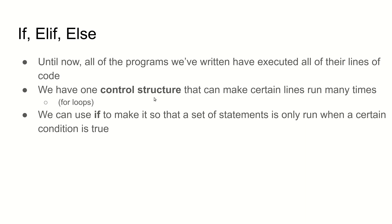Up until now, the programs that we've looked at were ones where each line of code got executed no matter what the input was, no matter what the different variables were equal to. The program just did one line, the next line, and so on. But we have seen one control structure — one structure in our code that can make it so that certain lines run lots of times — and that's a for loop.